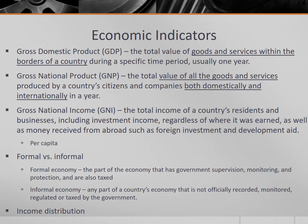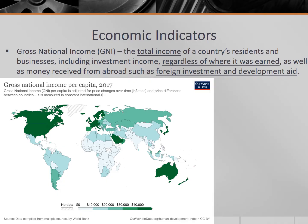But the production value versus the real income are two different things, which brings into the conversation gross national income, or GNI. This is the total income of a country's residents and businesses, including investment income, regardless of where it was earned, as well as money received from abroad such as foreign investment and development aid. GNI looks at the actual available income, whether that comes from within a country or from foreign direct investment or development assistance, making it a more accurate metric of a country's economy.